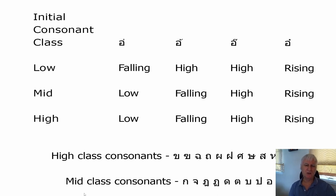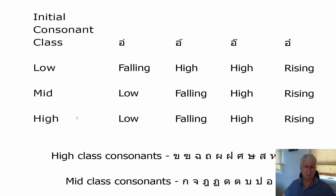Welcome back. In tutorials 13 and 14 I covered the tone rules — there are different tone rules depending on whether a word uses a tone mark or not. Today I'm going to the real world to find words on signs that use tone marks and try to identify the tone. Here's a recap of the tone rules for words that use tone marks. Across the top we've got the four tone marks: mai ek, mai tho, mai tri, and mai jattawa. The initial consonant of each word will be either low, mid, or high class. The majority of Thai consonants are low class, so try to remember the high class and mid class consonants — if a consonant isn't one of those, by definition it has to be low.